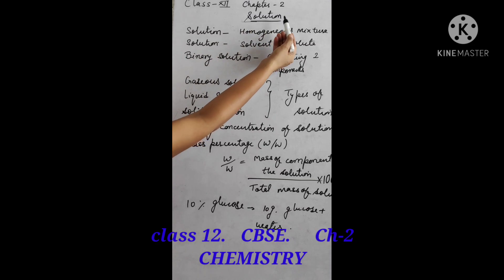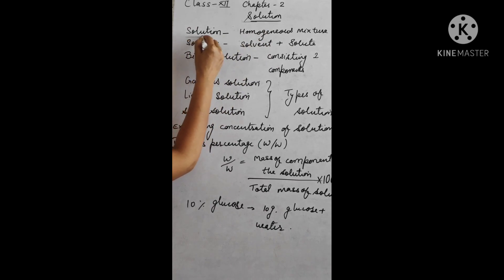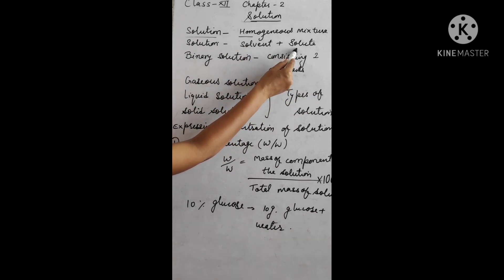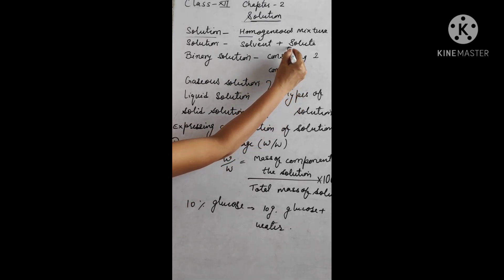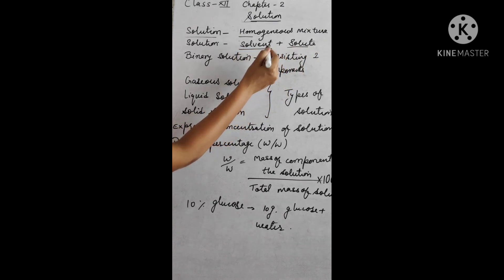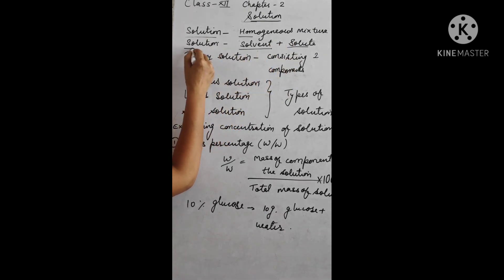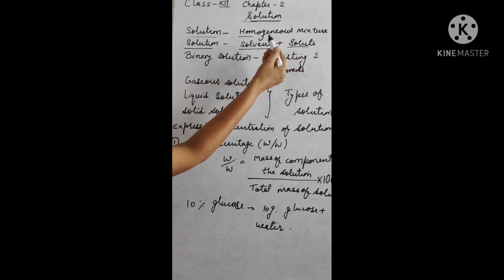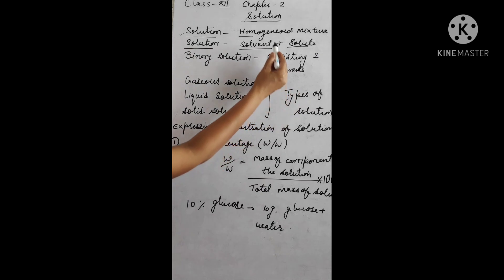Children, in Class 12 we are starting Chapter 2, that is Solutions. This is the CBSE portion. Solutions are always known as homogeneous mixtures. They are called homogeneous mixtures because the concentration of solute is the same throughout the mixture. True solutions are also called homogeneous mixtures.